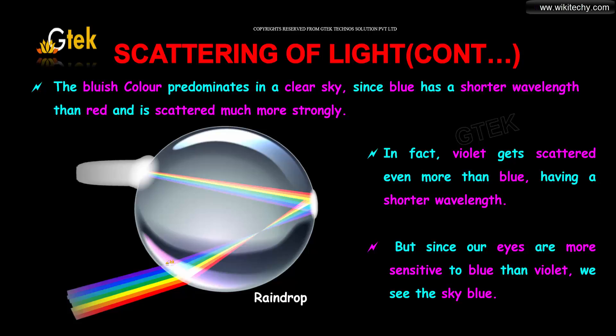In fact, violet light scatters even more than blue, having a very short wavelength. But since our eyes are more sensitive to blue than violet, we are able to see the sky as blue.